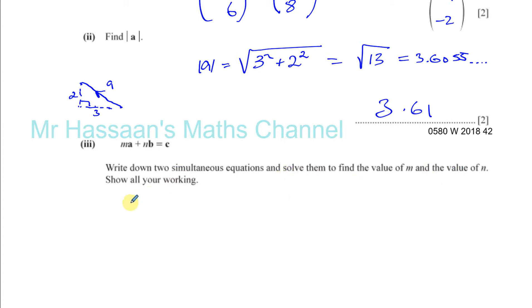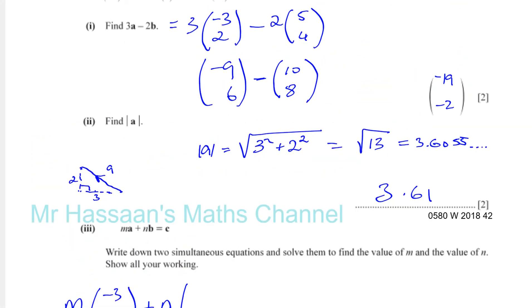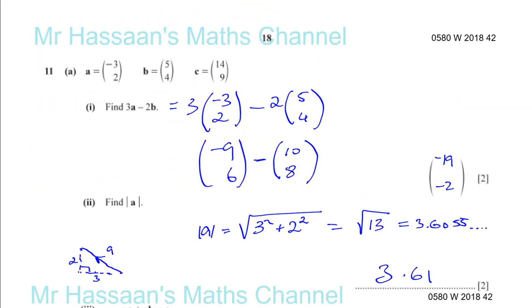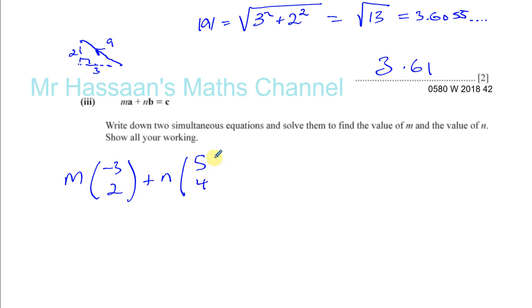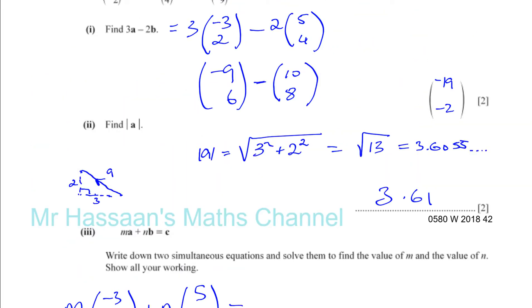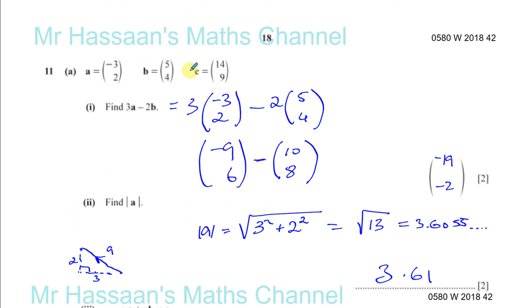So m times the vector a. The vector a was minus 3 and 2. Plus n times the vector b. And the vector b was 5, 4. Is equal to the vector c. And the vector c is 14, 9. As you can see from here, 14 and 9. So that's equal to 14, 9.